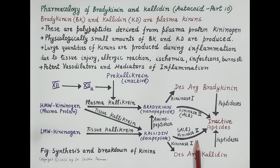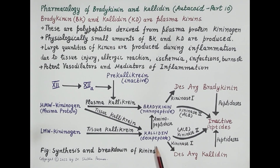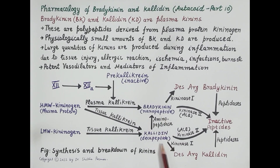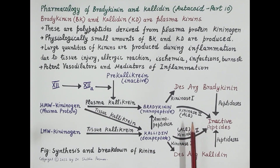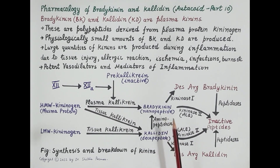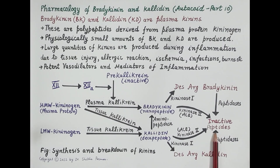Kinins are rapidly metabolized; their half-life is one minute. The main enzyme that breaks down these kinins is kininase 2. Kininase 2 is also called ACE, or angiotensin converting enzyme. This kininase 2 / angiotensin converting enzyme breaks down bradykinin and calidin and converts these kinins to inactive peptides.